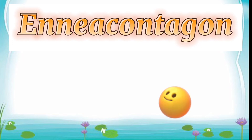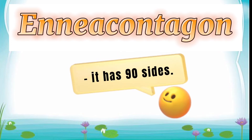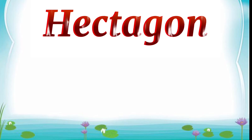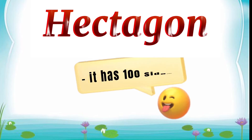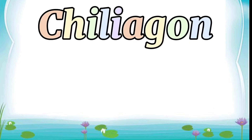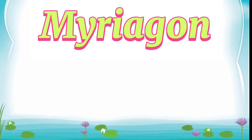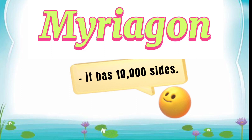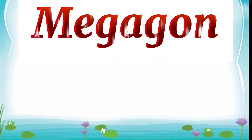Hectagon — it has one hundred sides. Kiliagon — it has one thousand sides. Miriagon — it has ten thousand sides. Megagon — it has one million sides.